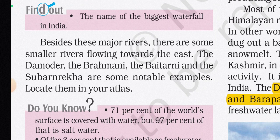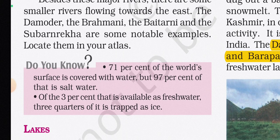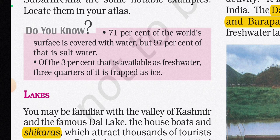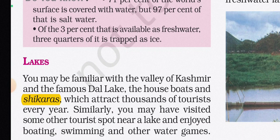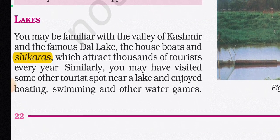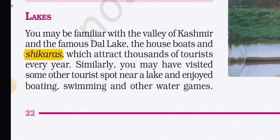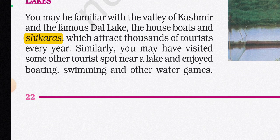The biggest waterfall in India is thought to be Jog Falls (Gersoppa) on the Sharavati River. Besides major rivers, some smaller rivers flow eastward — the Damodar, Brahmani, Baitarani, and Suvarnarekha are notable examples. About 71% of the world's surface is covered with water, but 97% of that is saltwater. Of the 3% available as freshwater, three-quarters is trapped as ice. You may be familiar with the Valley of Kashmir and the famous Dal Lake, with its houseboats and shikaras attracting thousands of tourists.